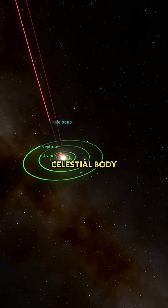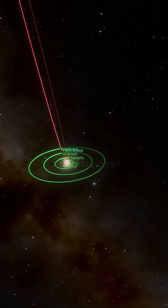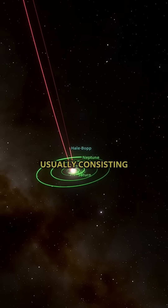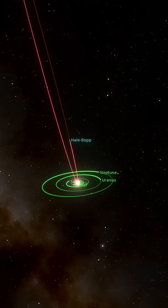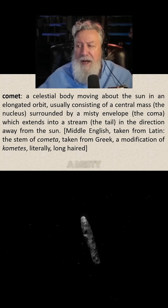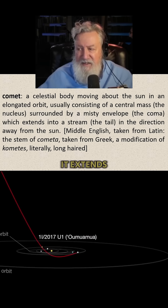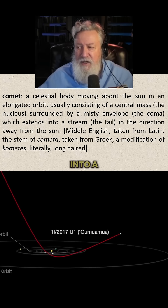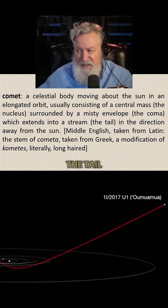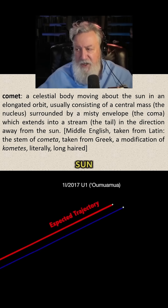A comet is a celestial body moving about the sun in an elongated orbit, usually consisting of a central mass — the nucleus — surrounded by a misty envelope, which is the coma. It extends into a stream, which is the tail, in the direction away from the sun.